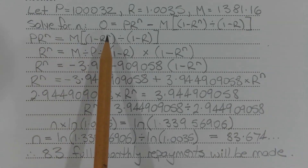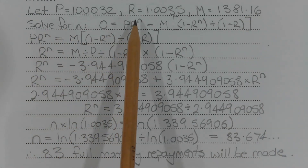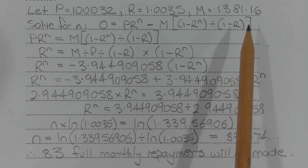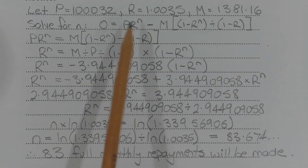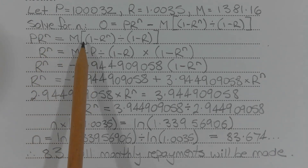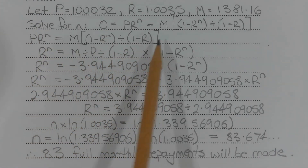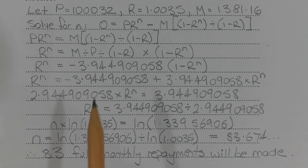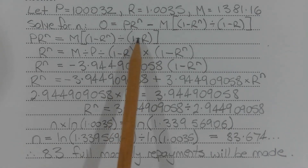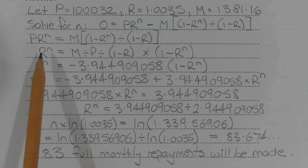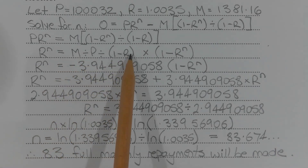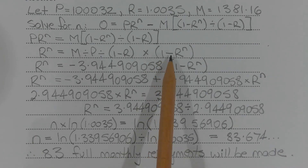We need to solve for N the equation 0 equals P times R to the power of N minus M times 1 minus R to the power of N in brackets divided by 1 minus R. Rearranging to make P times R to the power of N the subject, we get P times R to the power of N equals M times 1 minus R to the power of N divided by 1 minus R. Dividing both sides by P, R to the power of N equals M divided by P divided by 1 minus R, multiplied by 1 minus R to the power of N.